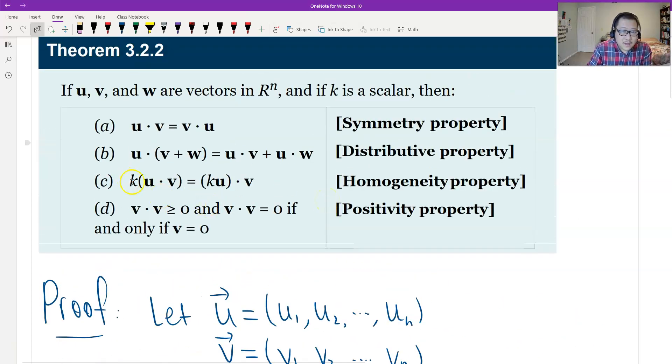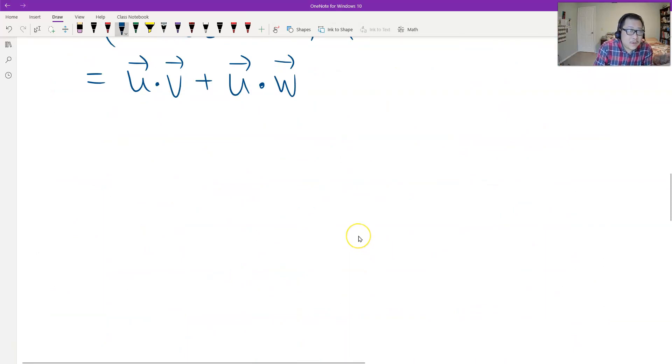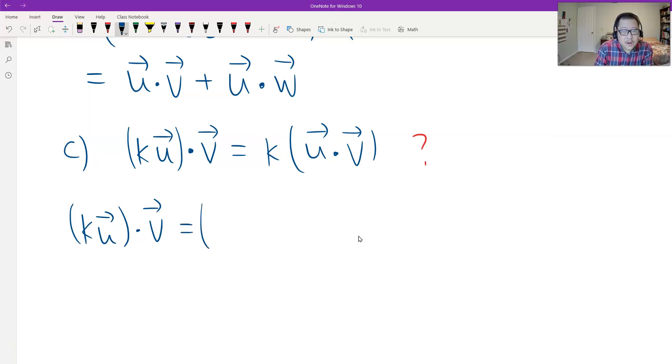Well, look at C. C is homogeneity. Homogeneity, like linear property. We can factor out the K. C is correct. So, it means if K times U dot V, we can factor the K out as K times U dot V. Homogeneity, we call. So, it's these two. The same I work from the left. So, KU dot V. Of course, it is KU1 by the scalar multiplication, KU2 to KUN. It is KU. And then dot times V1, V2 to VN.